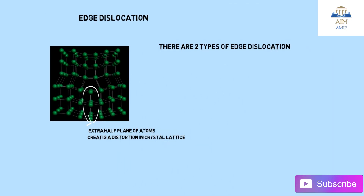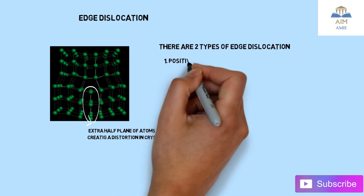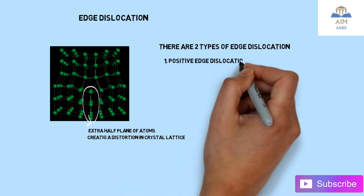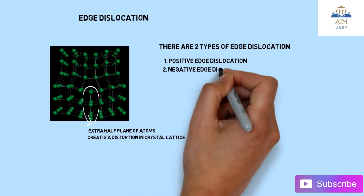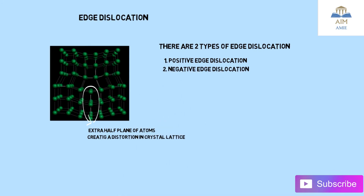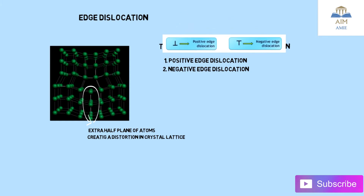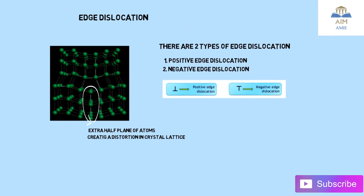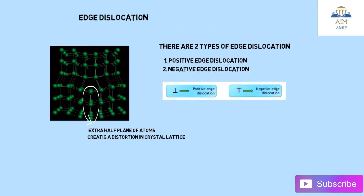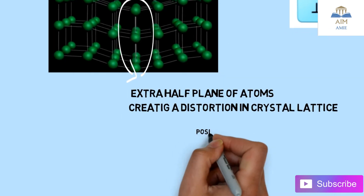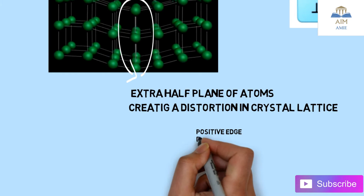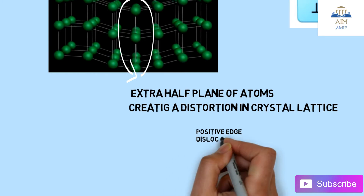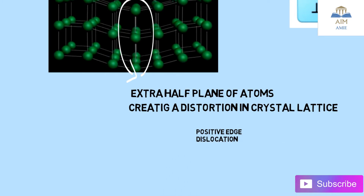There are two types of edge dislocation: the first one is positive edge dislocation and the second is negative edge dislocation. The inverted T symbol represents positive dislocation and the upright T represents negative. In this case, the extra half plane of atoms is from the downward direction, so this is the positive edge dislocation.